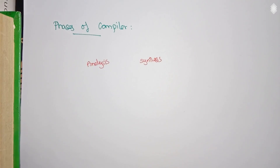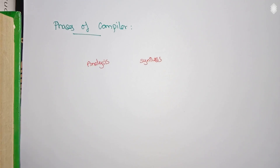Analysis checks whether the code is syntactically and semantically meaningful, and puts an intermediate representation for the source code. The synthesis phase takes that parse tree and synthesizes intermediate code out of it.